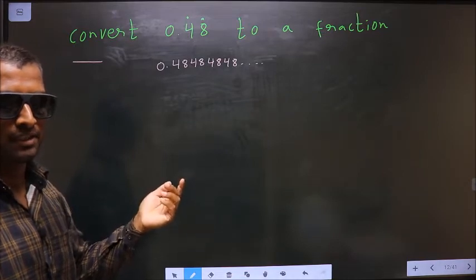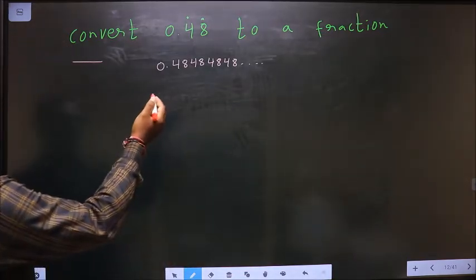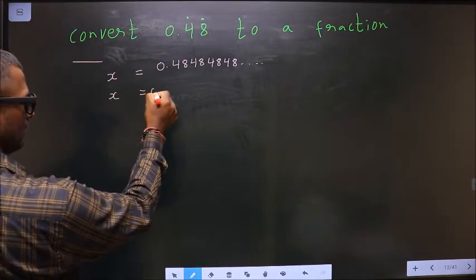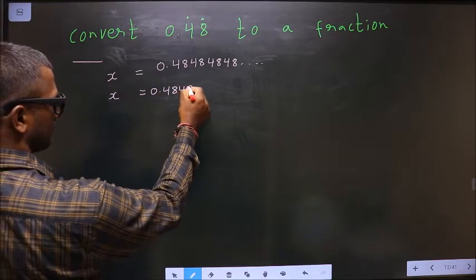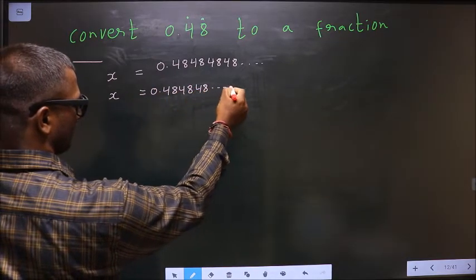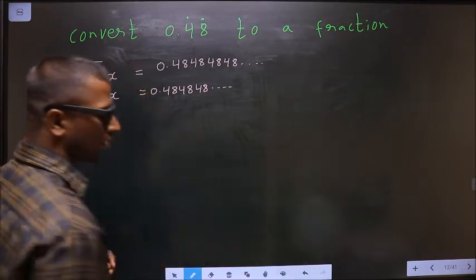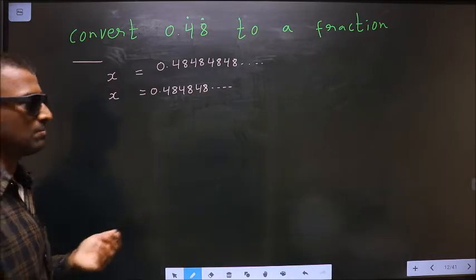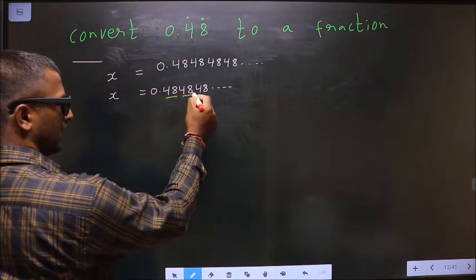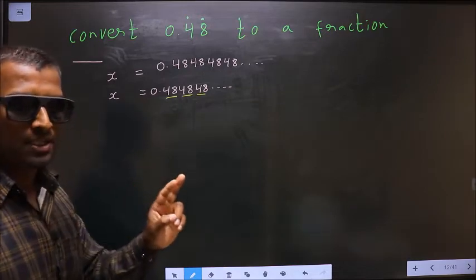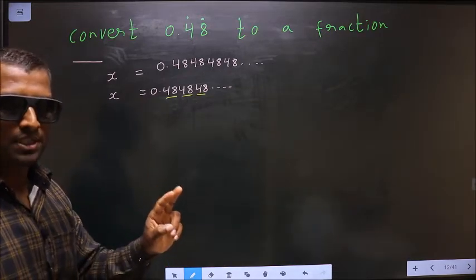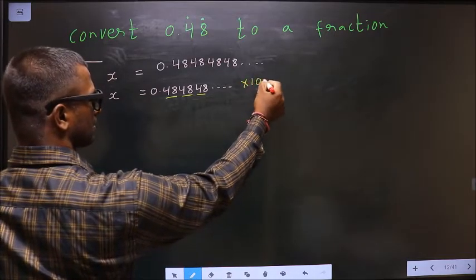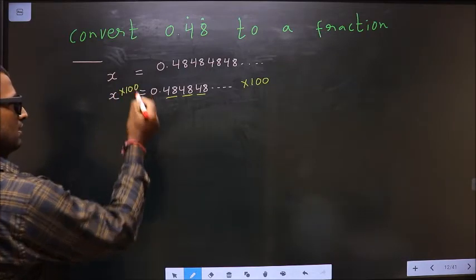We follow this method. Initially, whatever is given we take it to be x. Now you should check how many numbers are being repeated. 4 and 8, so two numbers are being repeated. Whenever two numbers are being repeated, we should multiply by 100 on both sides.